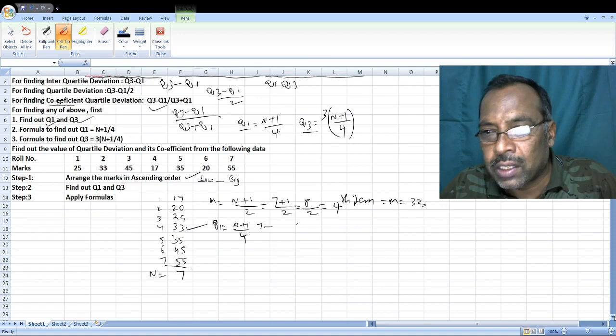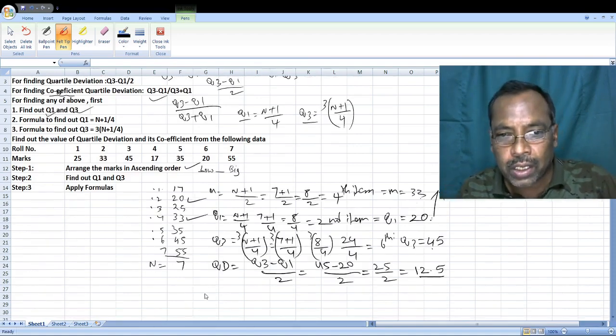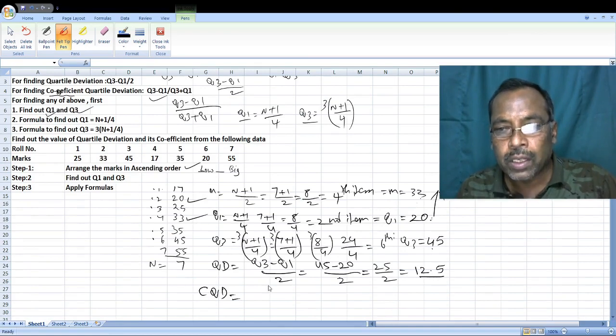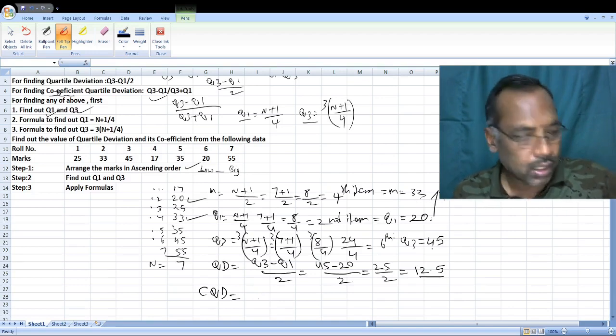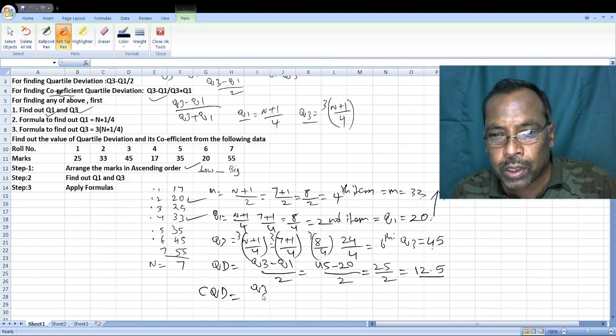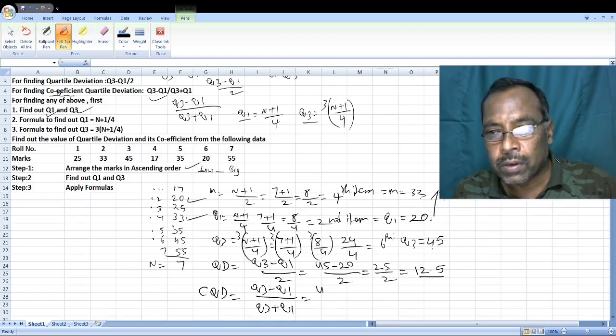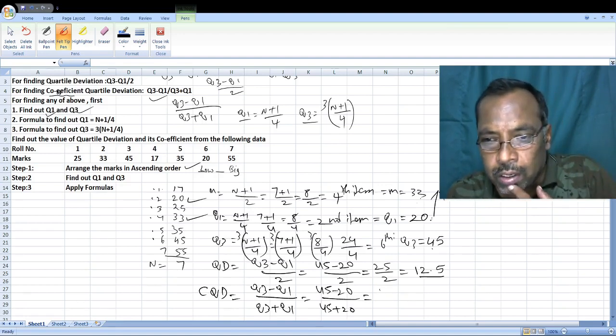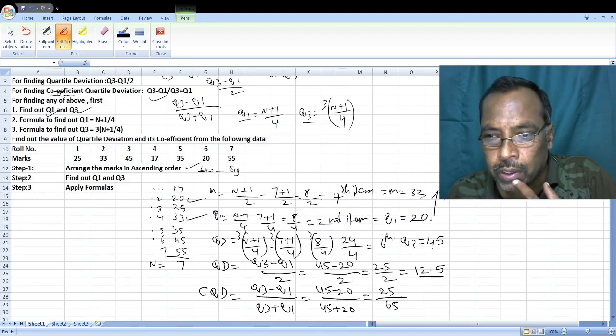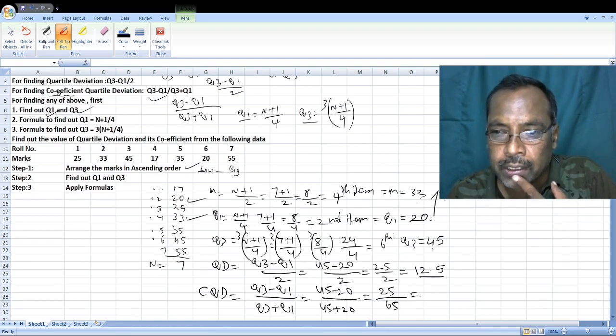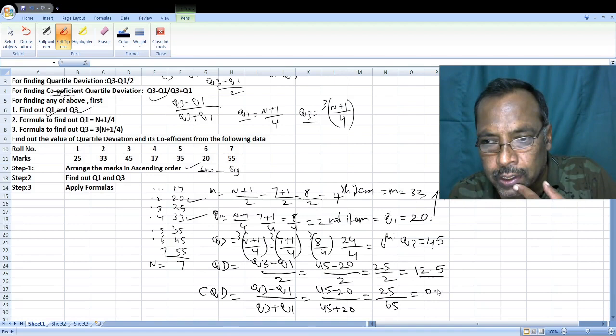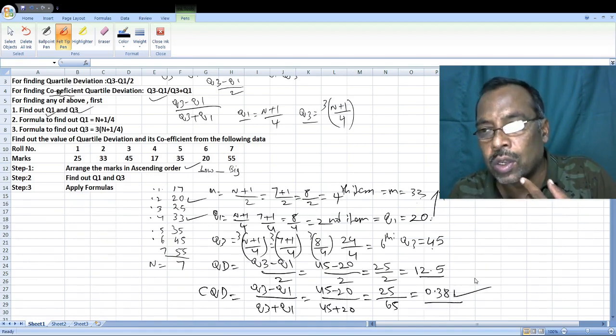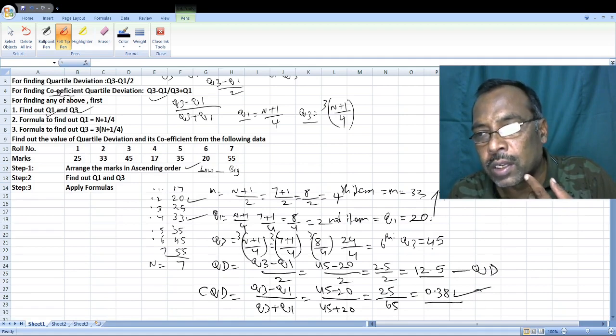Next, let us find the coefficient of quartile deviation, CQD. What is the formula for that? Q3 minus Q1 divided by Q3 plus Q1. That comes to 45 minus 20 divided by 45 plus 20, which is 25 divided by 65. If we divide this, we get 0.38, which is the coefficient of quartile deviation.